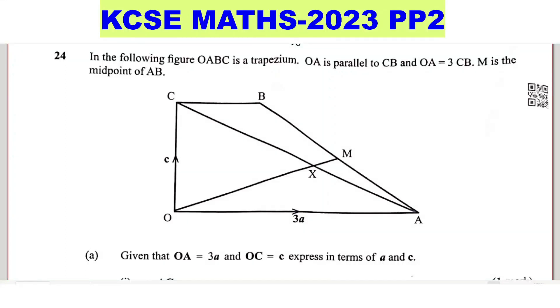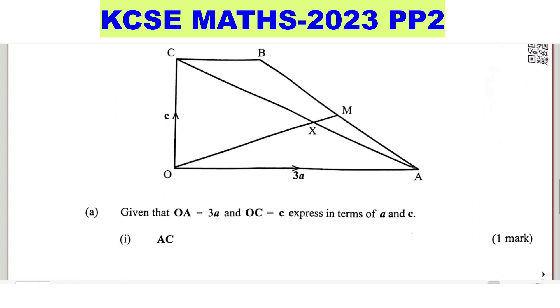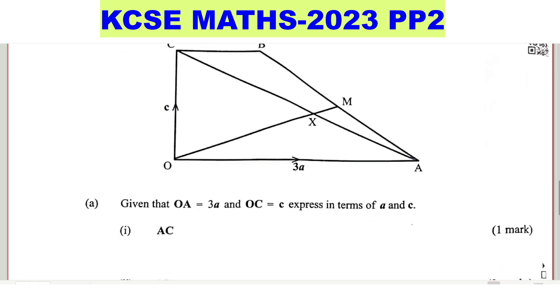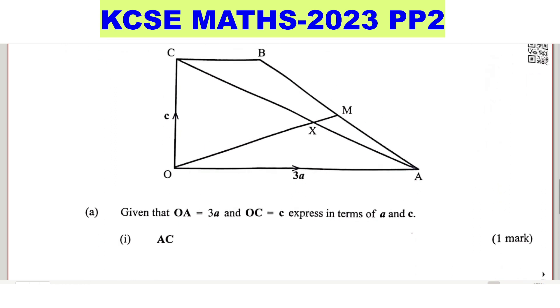Question 24. In the following figure, OABC is a trapezium, OA is parallel to CB, and OA is equal to 3CB. M is the midpoint of AB. Part A, the question: given that OA is equal to 3a and OC is equal to c, express in terms of a and c.